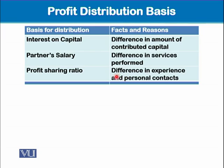Different partners may have different levels of experience or different business contacts on which the business runs. The partner who is more experienced or has more business contacts would be given a greater profit share based on a ratio. So interest on capital, partner salary, and profit sharing ratio are the three bases of profit distribution.